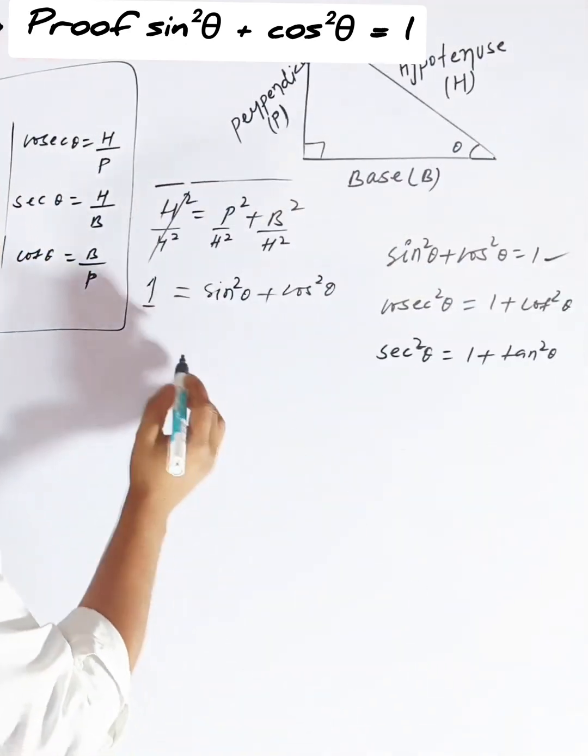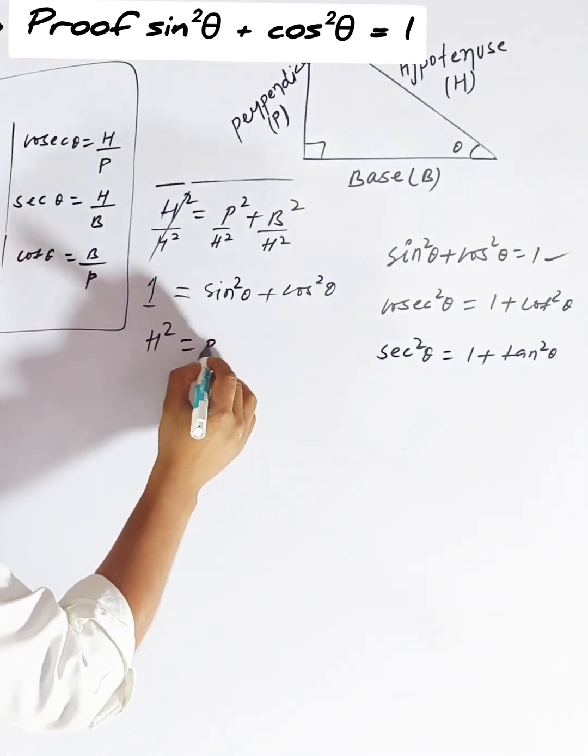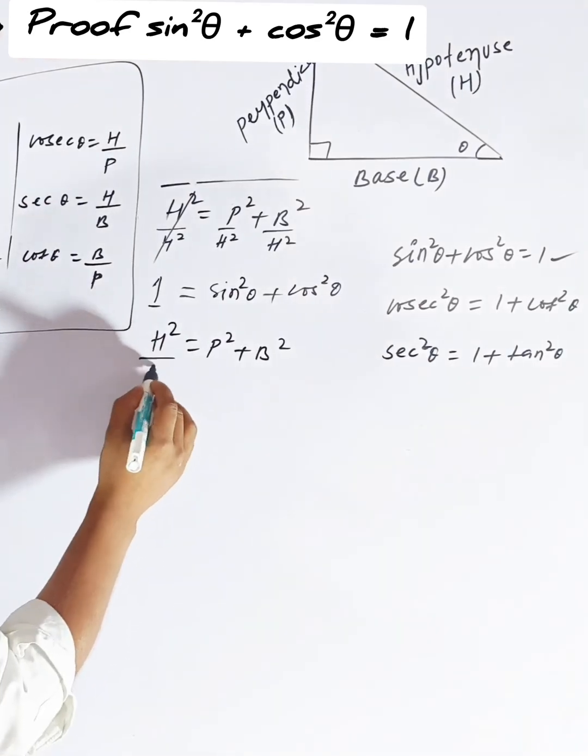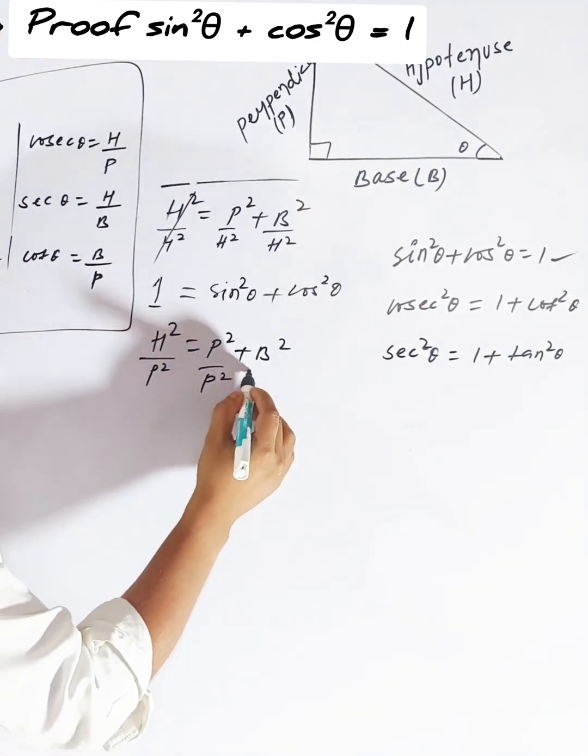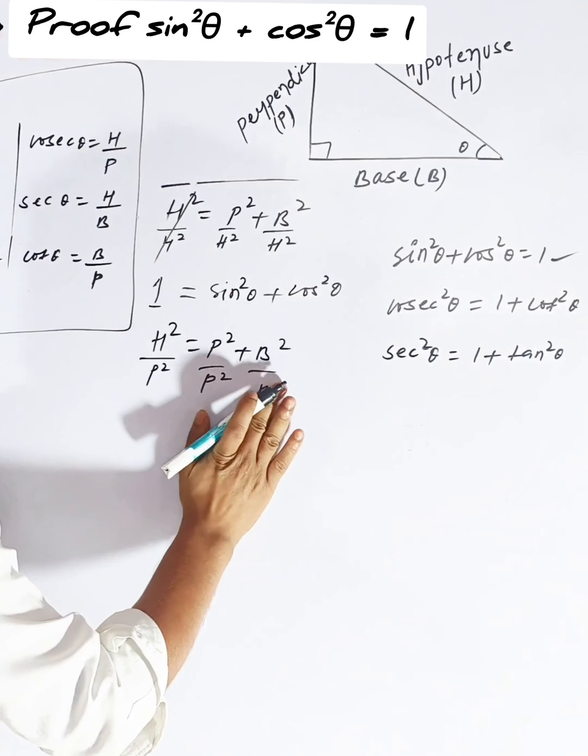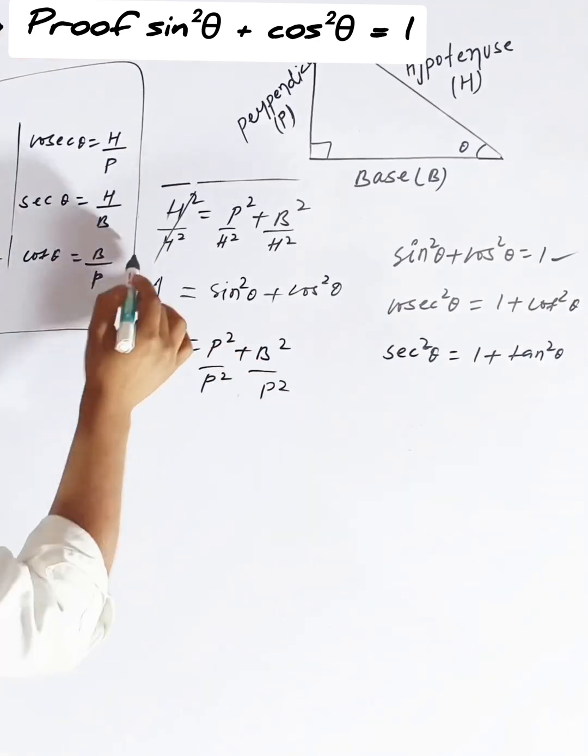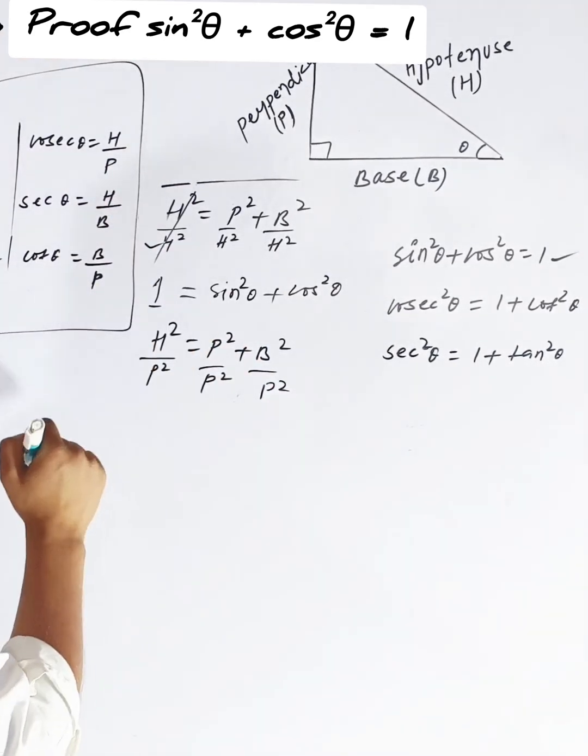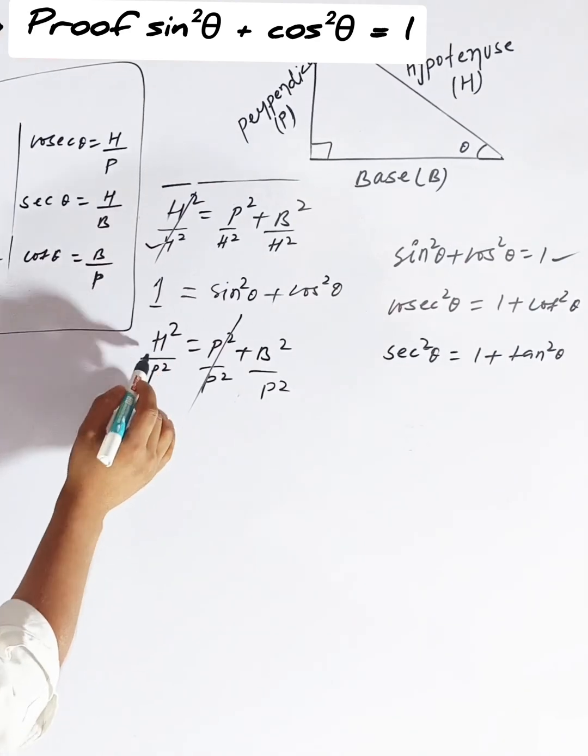Second formula: write the same Pythagorean formula again. Do one thing for all, then divide by p squared. You have to divide one by one, once by the square of the hypotenuse, once by the square of p. So it will cancel out.